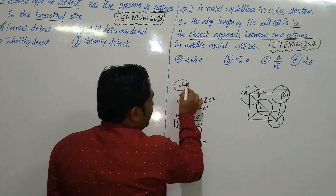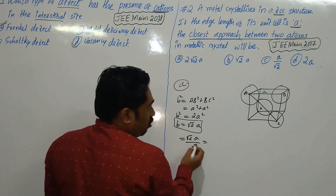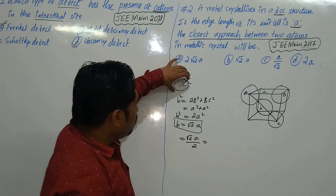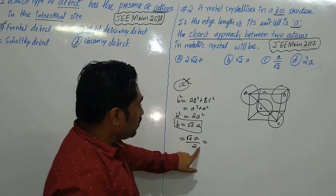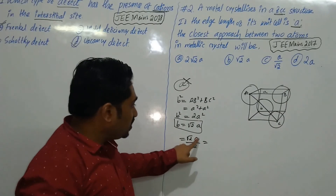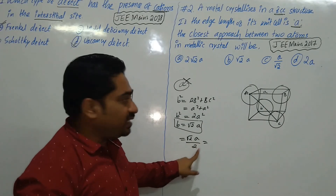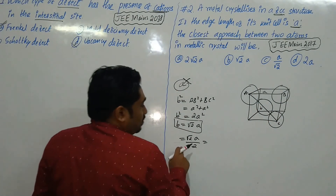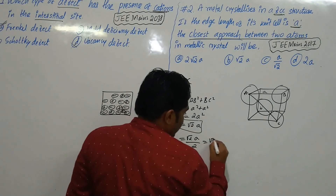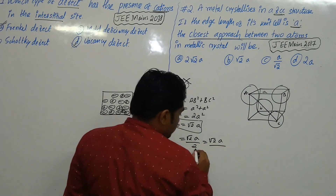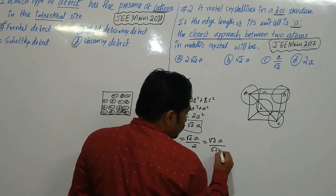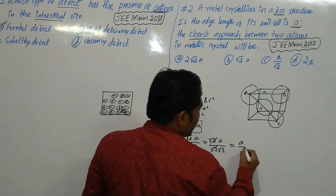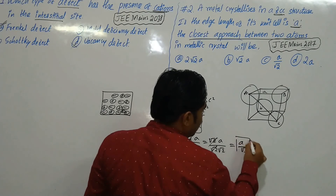Along the edge the closest approach is directly A, but along the face diagonal it is A/√2, which is less than A. So the closest approach is not A — the face-centered particle is closer to the corner particle. The closest approach is A/√2.